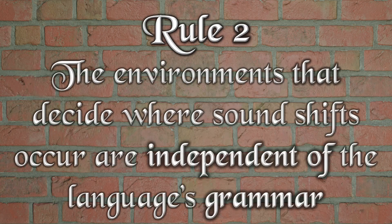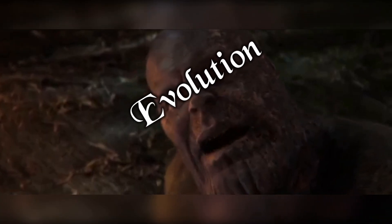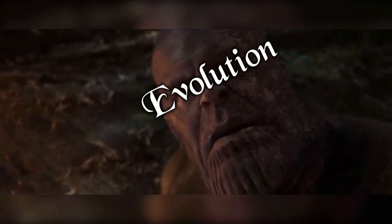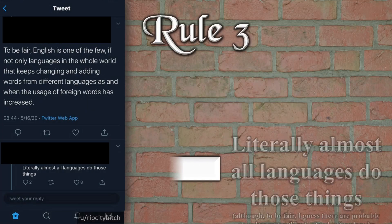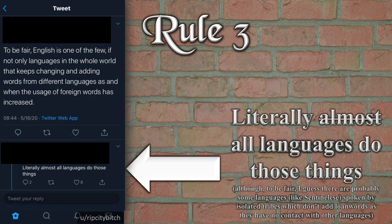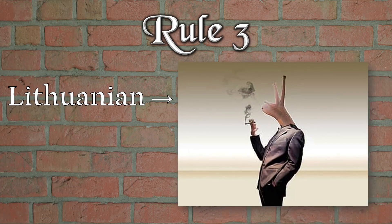Two: sound change ignores grammar. You can't have a sound become something else only in adjectives agreeing with a third person argument, or only with adjectives or anything like that. Three: I am inevitable. Regardless of what the top post on r/badlinguistics thinks, all living languages evolve — constantly — even if they're like Lithuanian and do it at the speed of a snail on sedatives.